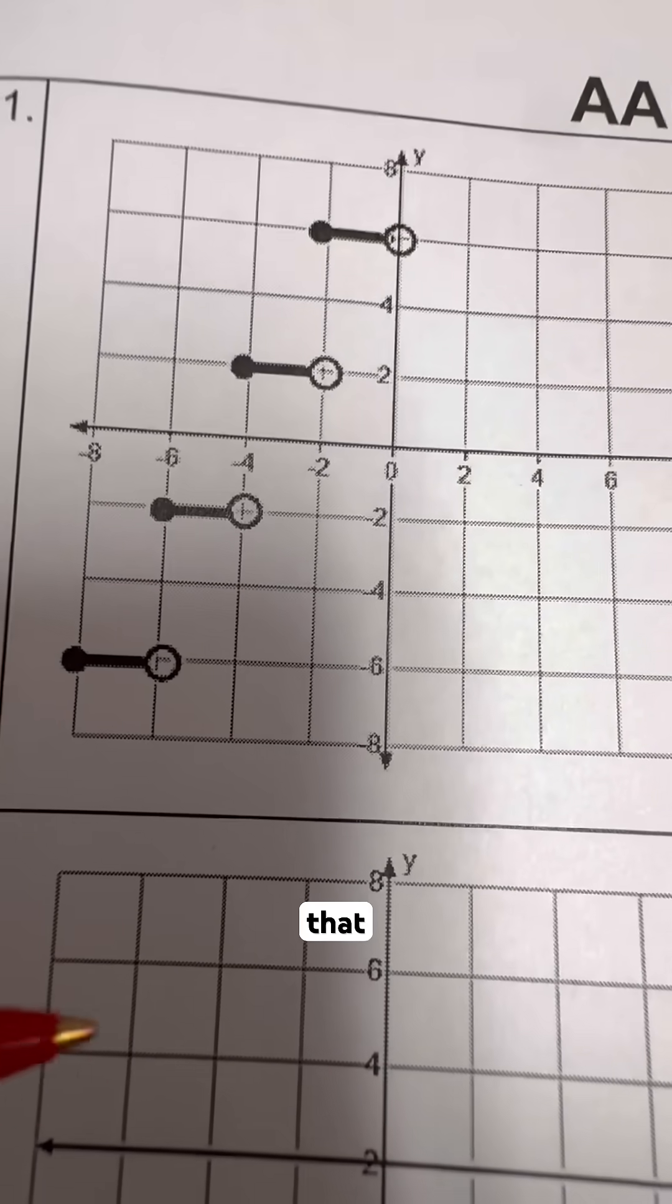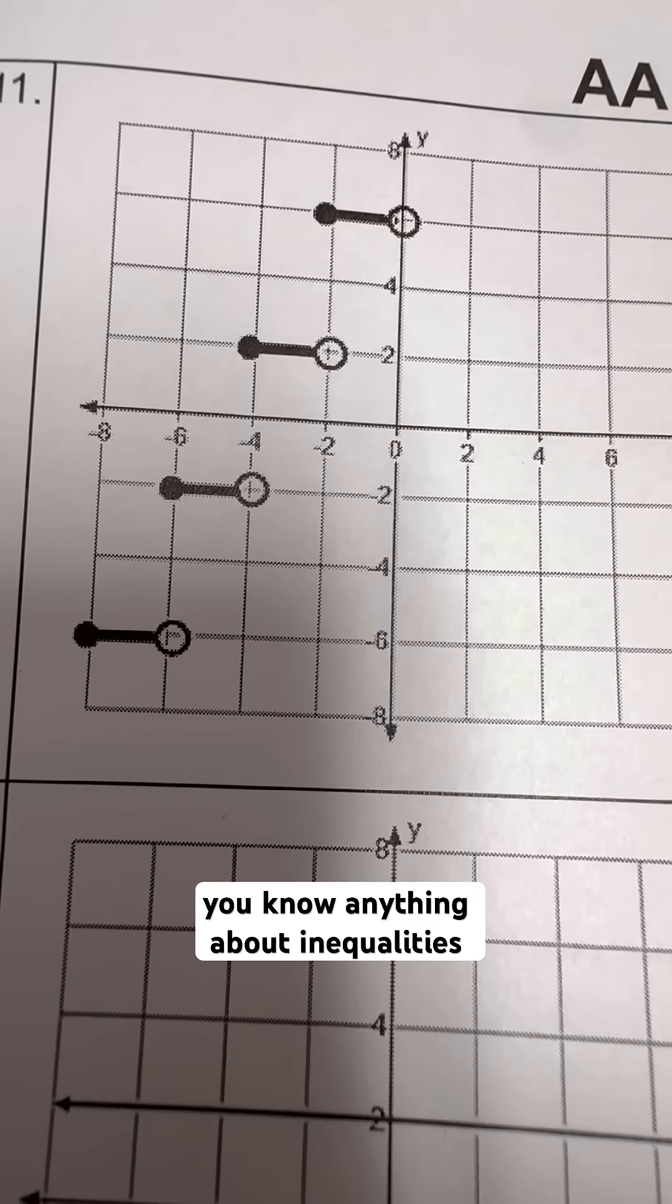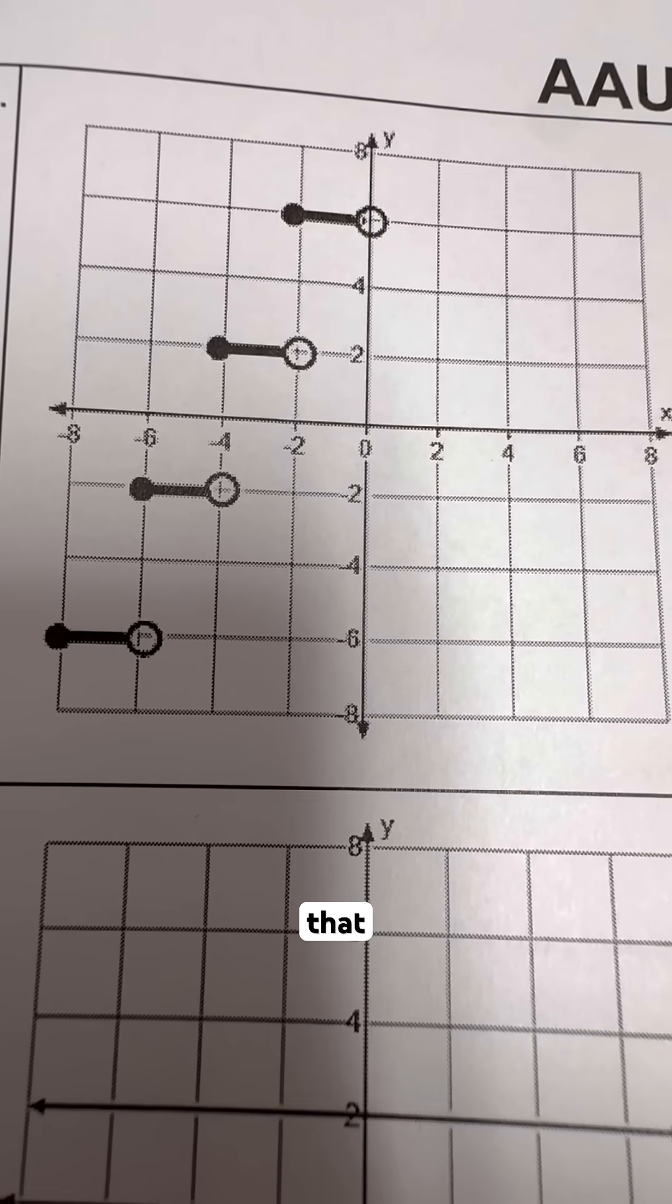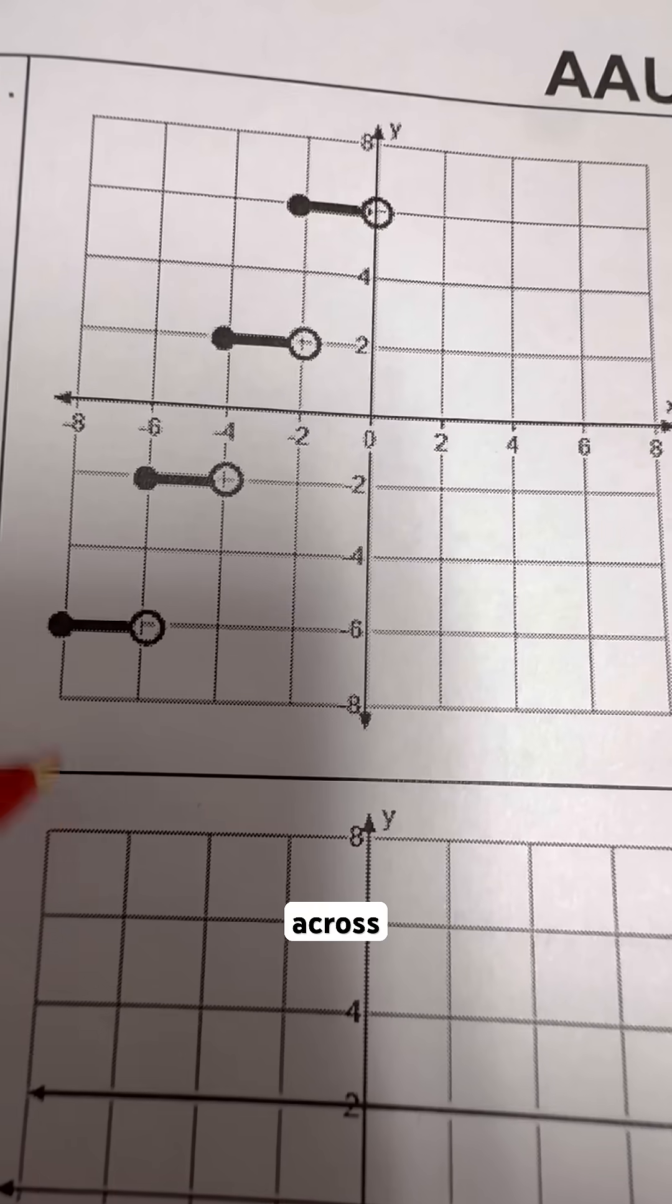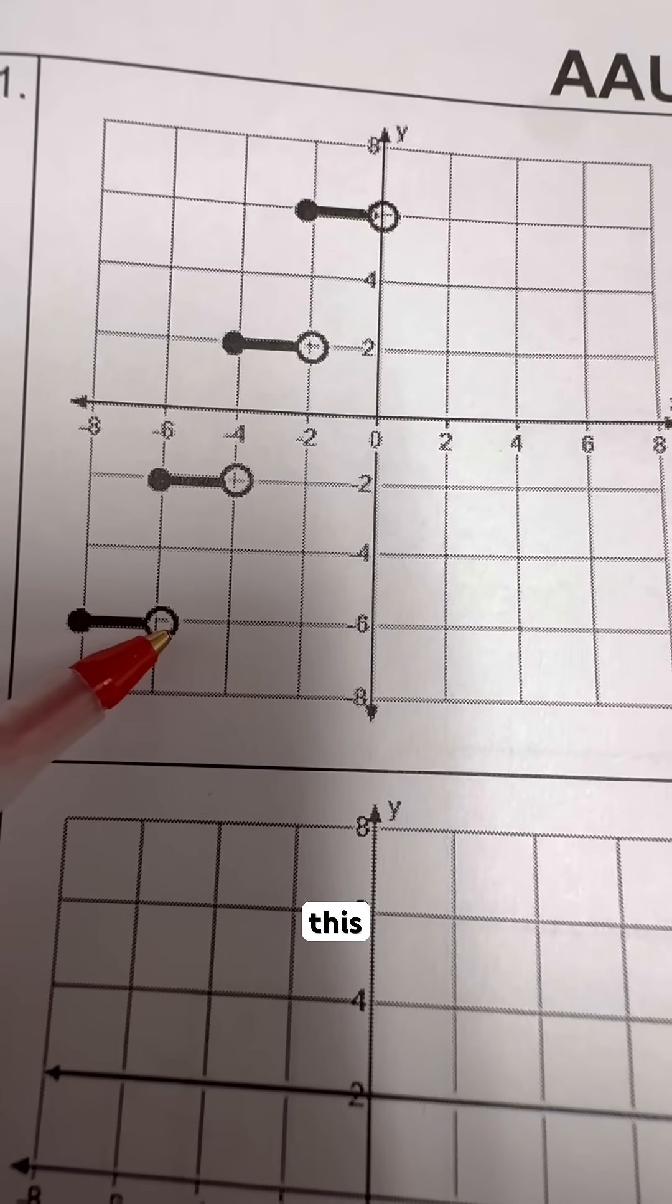Now, notice that in this situation, there is an open circle here. If you know anything about inequalities, open circles means that it does not include that value. So that line that is going across, this little short line, it includes this point and every point up to this open circle.